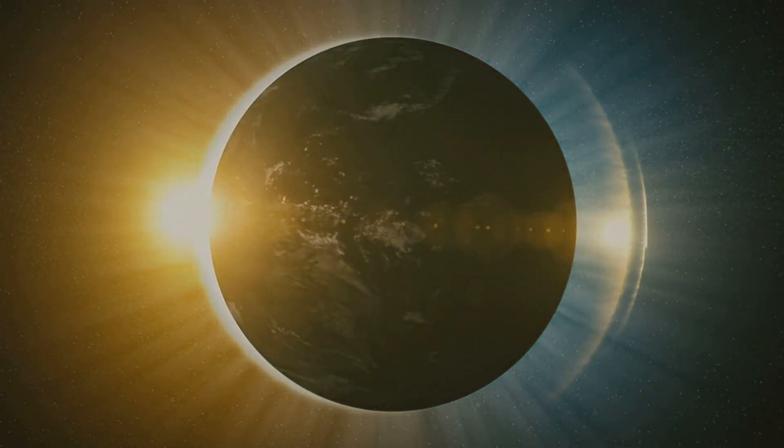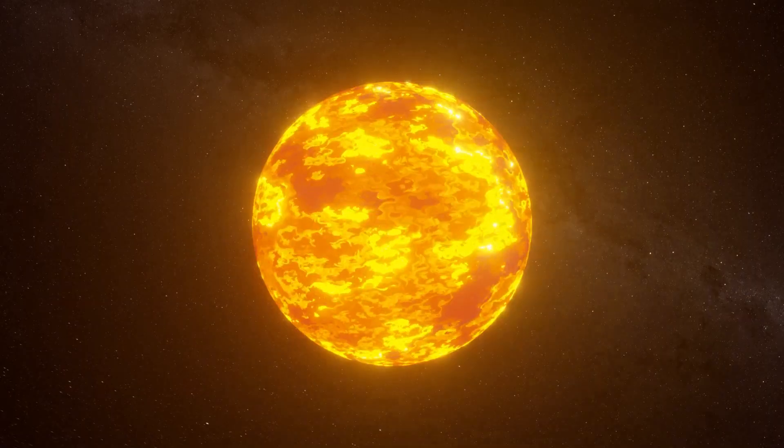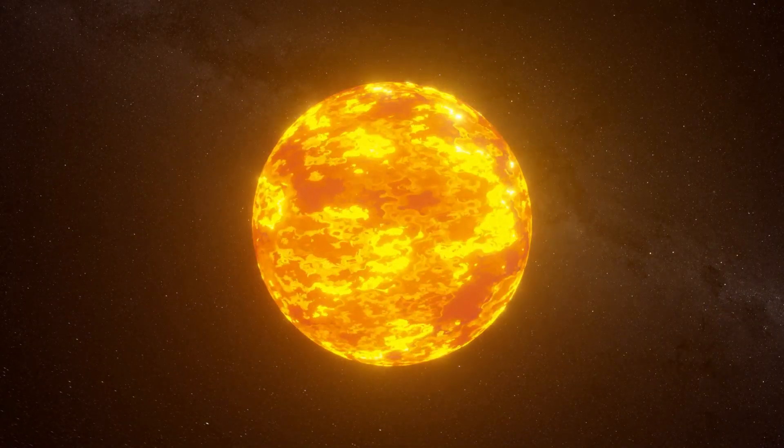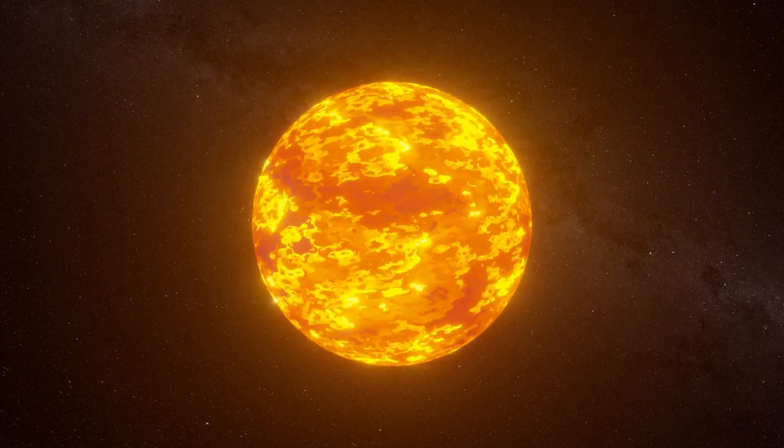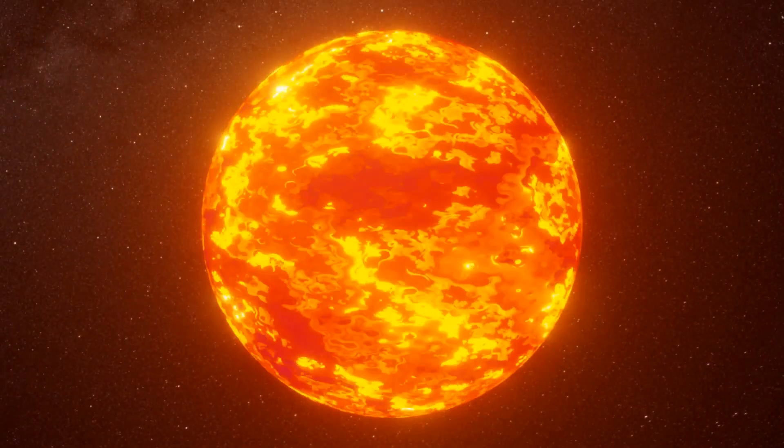But there's a catch. Despite their dark appearance, these holes are not actually visible to the naked eye. They can't be seen in the regular light spectrum. Instead, they become apparent only when observed in ultraviolet light. That's right, the Sun has a whole different look when viewed under ultraviolet light, revealing these dark, mysterious coronal holes.